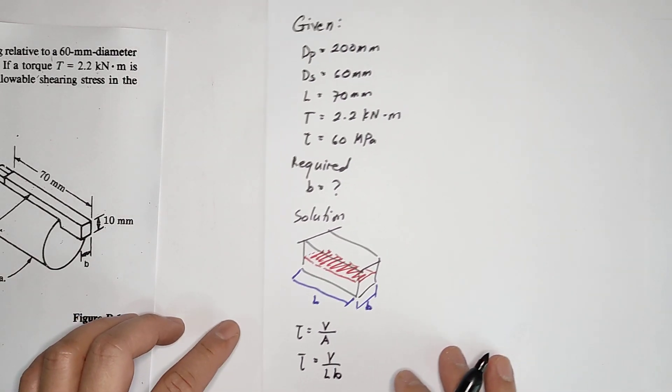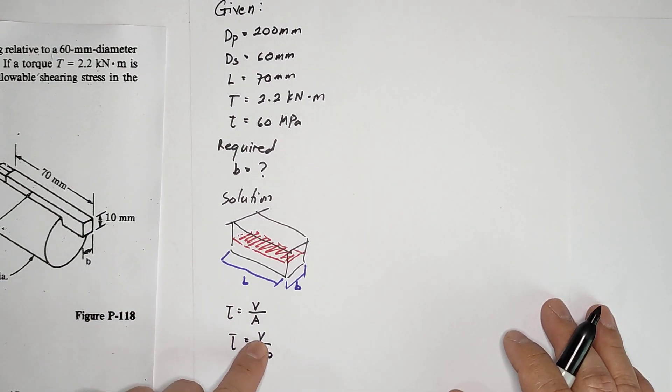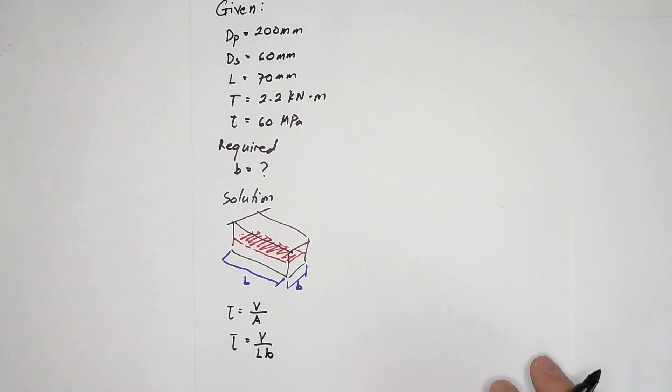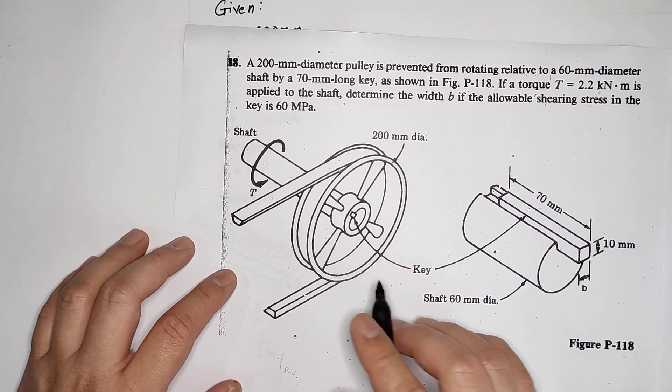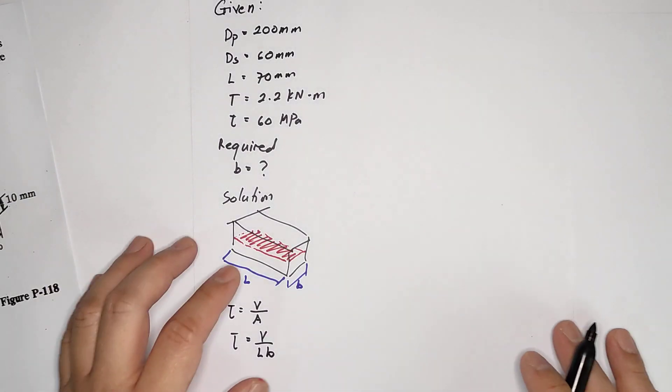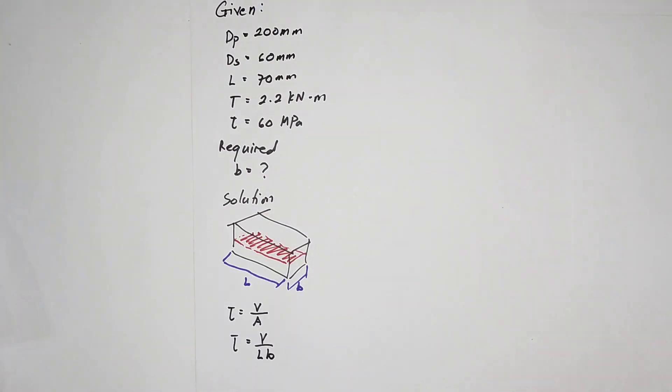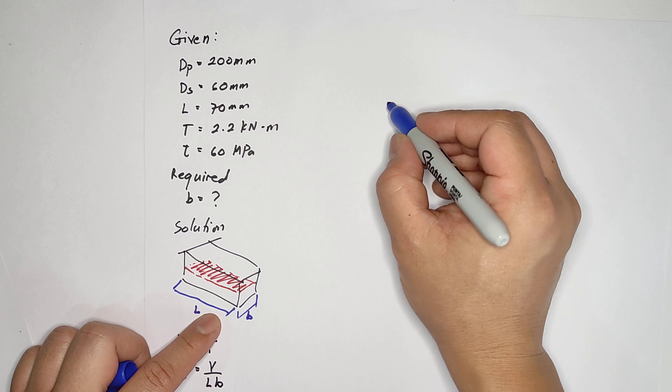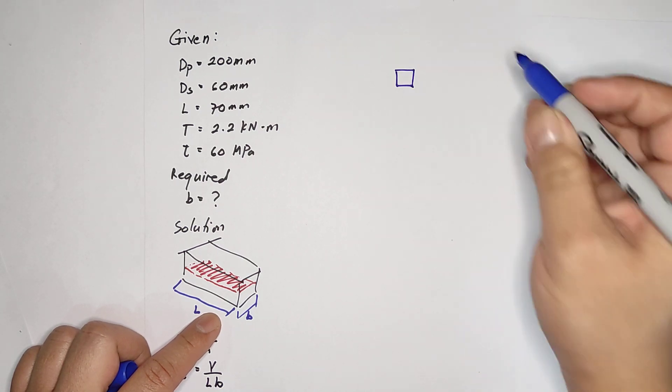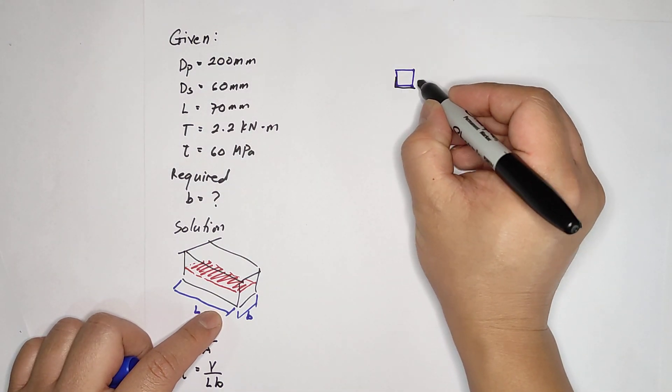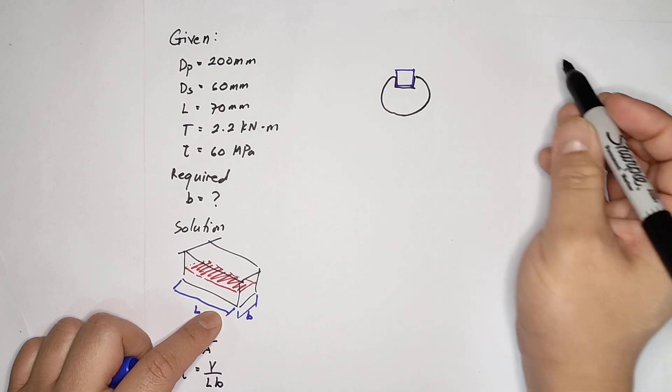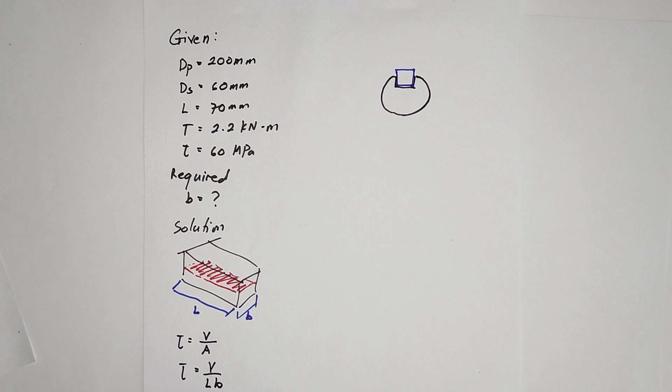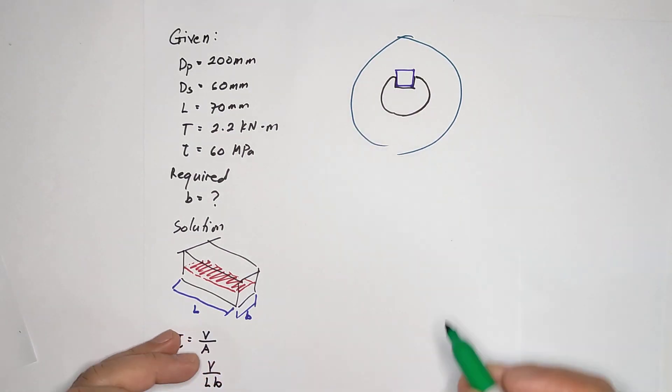Now, if you have the shearing force, you can now solve for the width B. But unfortunately, you don't have a force. Now, if you look at the figure, I will just draw a front view of this figure. You have the key, you have here the shaft, then you have the pulley.